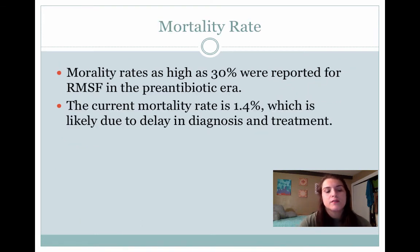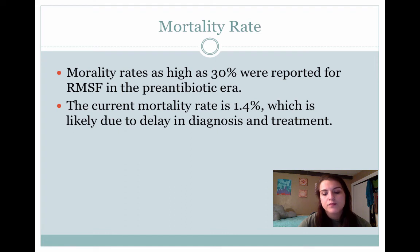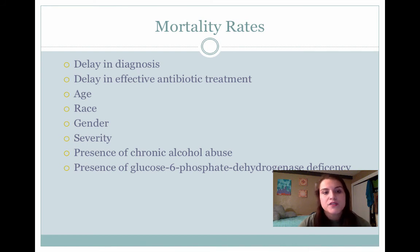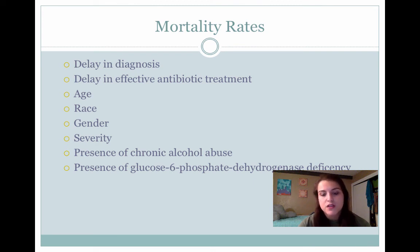The mortality rate depends on a few factors. It was higher in the pre-antibiotic era because patients weren't treated quickly — delayed treatment is a primary reason for death. Now the mortality rate is closer to 1.4%, likely due to delays in diagnosis and treatment, as well as complications, severity, age, and other factors. Key mortality factors include delay in effective antibiotic treatment, diagnosis, age, race, gender, severity, chronic alcohol abuse, and the presence of glucose-6-phosphate dehydrogenase deficiency — both of which came up frequently in the research.